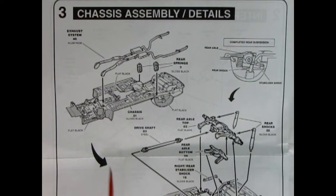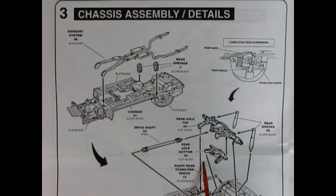Panel three shows our chassis assembly details and you can see this is a big, big sheet of paper. So we've got our exhaust system going in place and our rear springs and then we've got our rear differential here. There's also a axle bottom so those glue together.